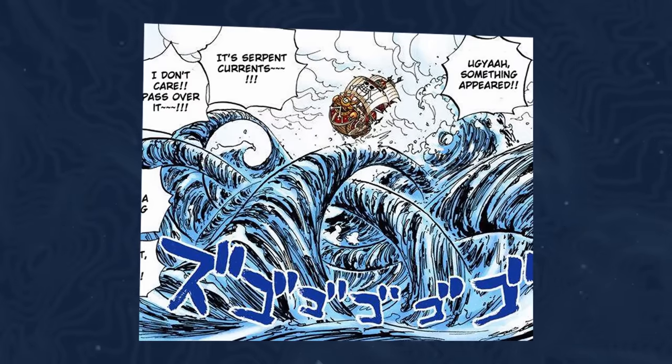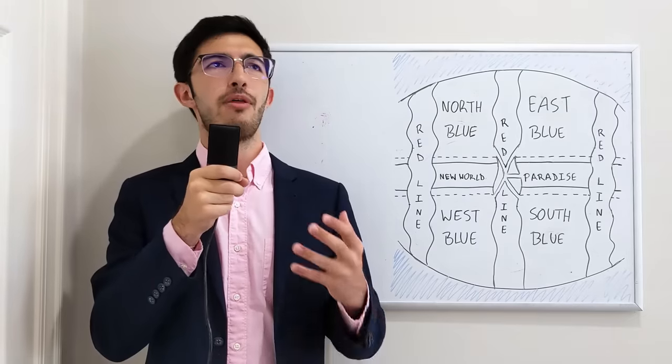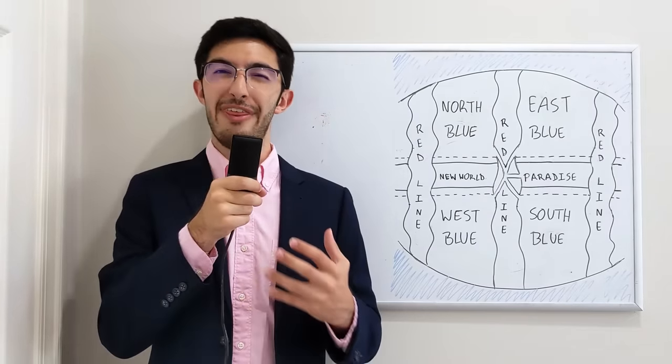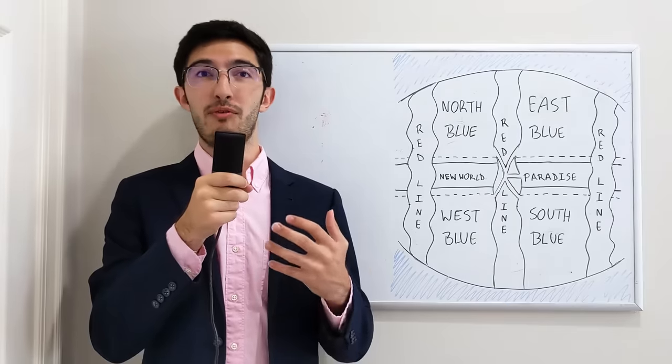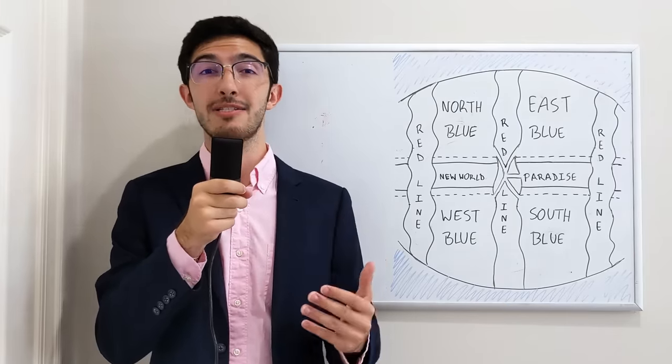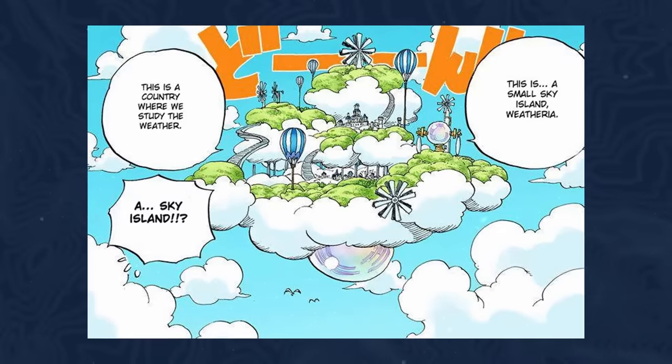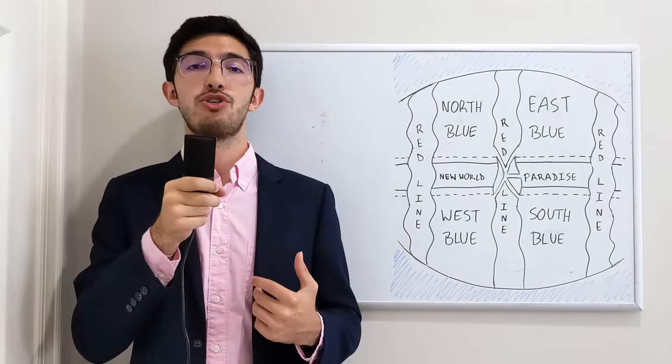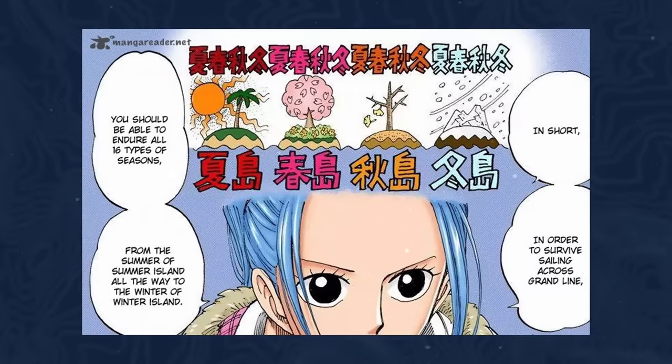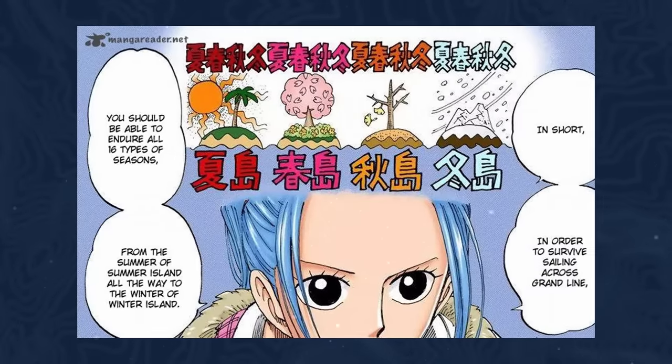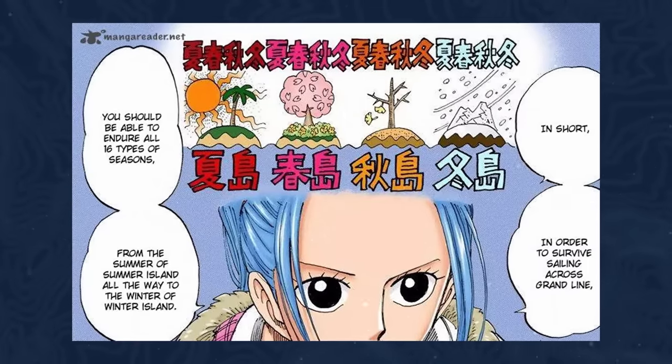And even though real-world oceans aren't that variable in the amount of weathers that they can have across short spans, we can actually understand this to some degree using real-world physics and climatology. If you think back to what I just said a couple minutes ago about the different islands in the Grand Line having more or less stable but different climates in between themselves.